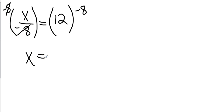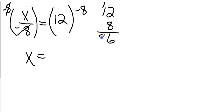On this side, the 8s cancel. On the right side, we've got 12 times negative 8. 12 times 8 gives me 96, and because I have one negative, that's going to make my sign negative. So the answer is negative 96.